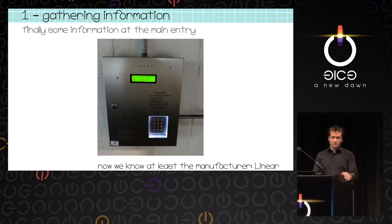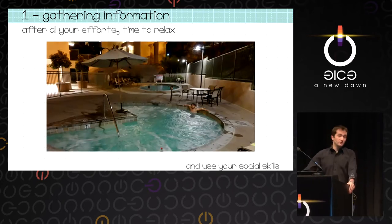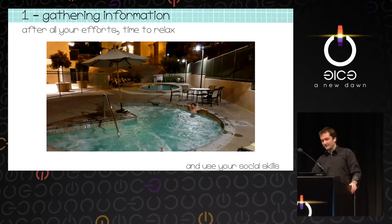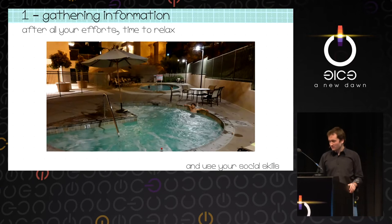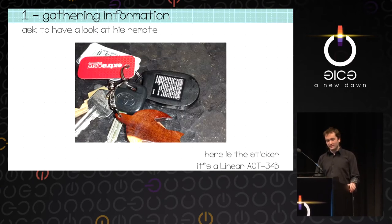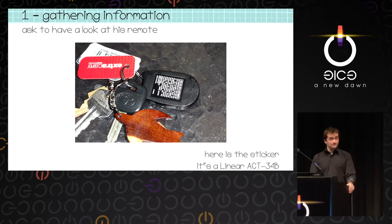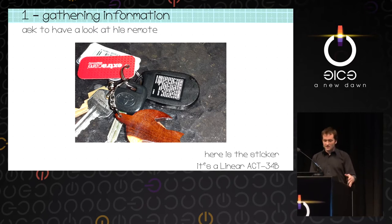After such hard work running around the building, you enjoy the hot tub — and this is where you use your social skills, simply because every resident has a remote. You make new acquaintances, make new friends, and you ask: can I have a look at your remote? This one had the sticker, and it's particularly useful. From the sticker, we find the vendor is Linear and the product is ACT34B.